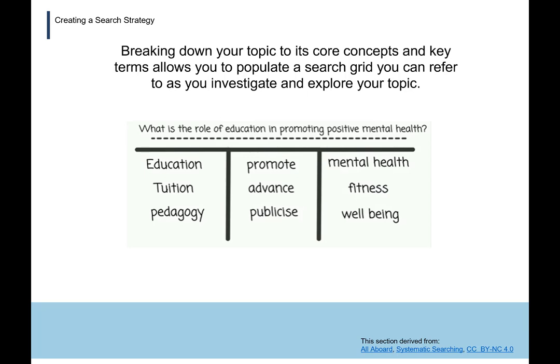Now it's about arranging things in more of a structure. In a grid like this, you can arrange your key terms and think about other ways of articulating the concepts that make up your topic. In this case, the topic is: what is the role of education in promoting positive mental health? There were three core concepts identified: education, promotion, and mental health. Synonymous terms were then found — for education: tuition, pedagogy; for mental health: fitness, and the more contemporary term well-being.